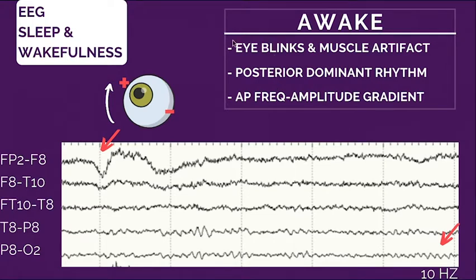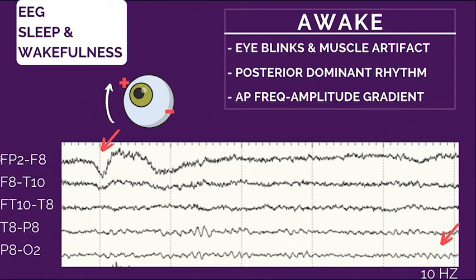An important finding to go over are eye blinks — this has to be memorized. If you look at the eyeball, the cornea is positive and the retina is negative, so that's a dipole. Imagine a scalp with the eye globe positioned near it. When we close our eyelids, our eyeballs go up — that's called Bell's phenomenon. So the cornea goes up and the retina goes down.